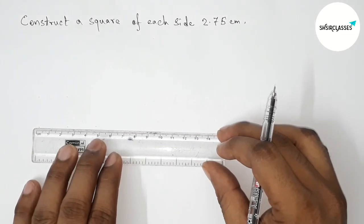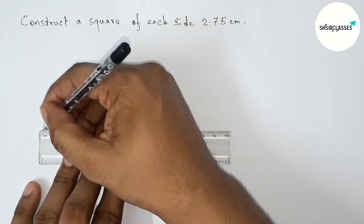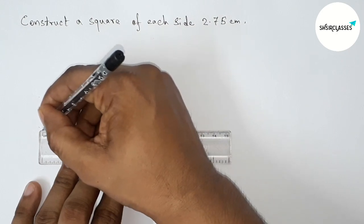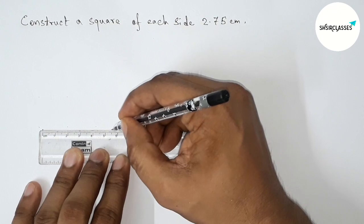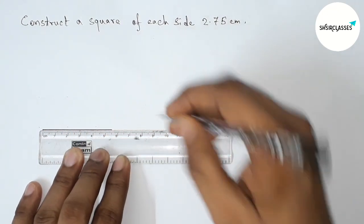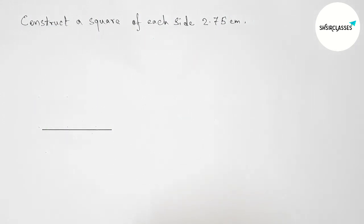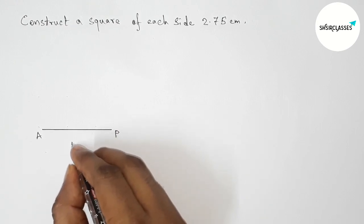First of all, drawing here a line segment of length 5.5 centimeter. So this is one, two, three, four, five, and this is a 5.5 centimeter line segment. Now taking here point A and here P, so AP is a 5.5 centimeter line segment.